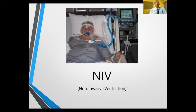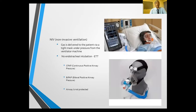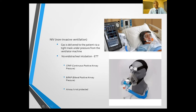If those fail, non-invasive ventilation (NIV) is an option. NIV is very popular and studies show it has reduced intubation rates. Gas is delivered via a tight-fitting mask — full face, nasal, or half-face — from an NIV machine. There is no endotracheal tube in the patient, so the airway is not protected. There are two types: CPAP (continuous positive airway pressure) and BiPAP (bi-level positive airway pressure) which has two pressure levels.